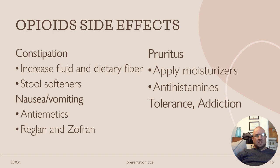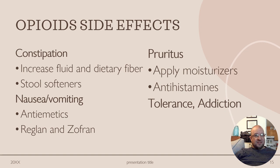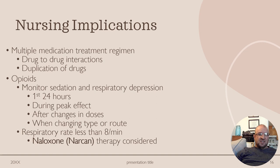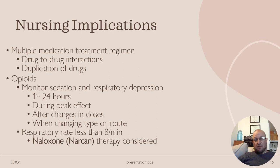A few opiate side effects include constipation, nausea, itching, and the potential to develop tolerance or addiction. Nursing implications include watching for drug-to-drug interactions and duplication of medications. For opiates, monitor for sedation and respiratory depression during the first 24 hours, during peak effect, after dose changes, and when changing the route of administration — for example, IV works much quicker than oral. For respiratory rates under eight breaths per minute, consider Narcan therapy, which immediately blocks opiates.